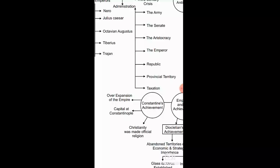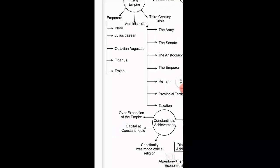Each provincial unit was regulated and ruled by one representative. Taxation was also properly devised so that the ruler could collect revenue in a structured way — people were not overburdened, and the state earned sufficiently to run public welfare facilities. This was maintained through the Roman direct rule system, in which the whole empire was divided into subunits, each supervised by one representative of the king.